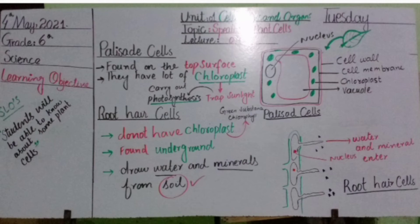Palisade cells are found on the top surface of the leaf — keep that in mind. They have a lot of chloroplasts. Since palisade cells are found in the leaves, they should contain chloroplasts.